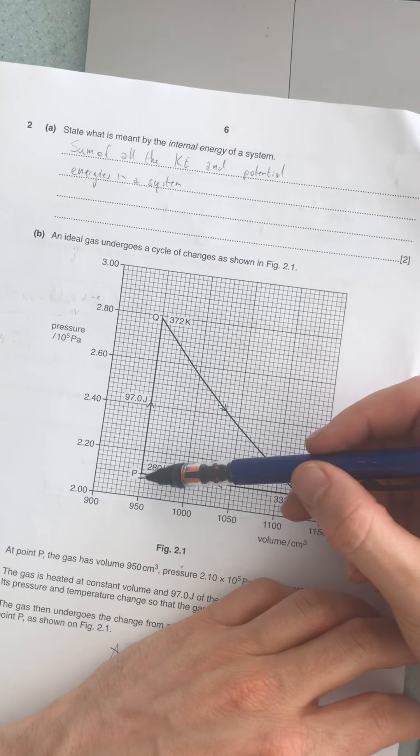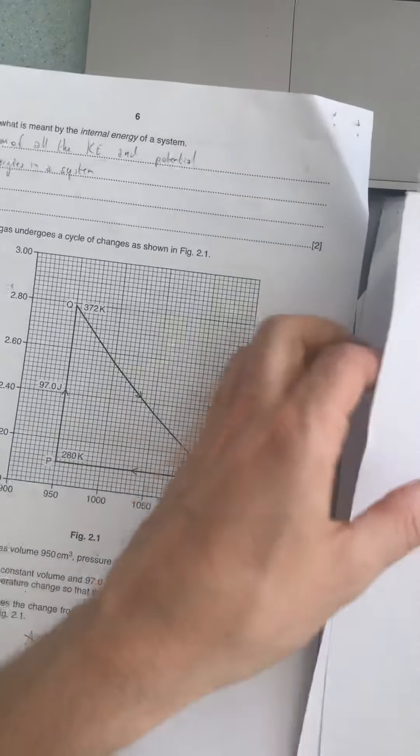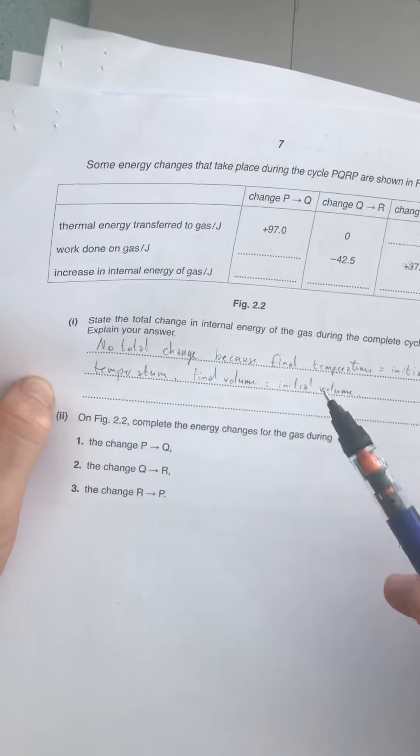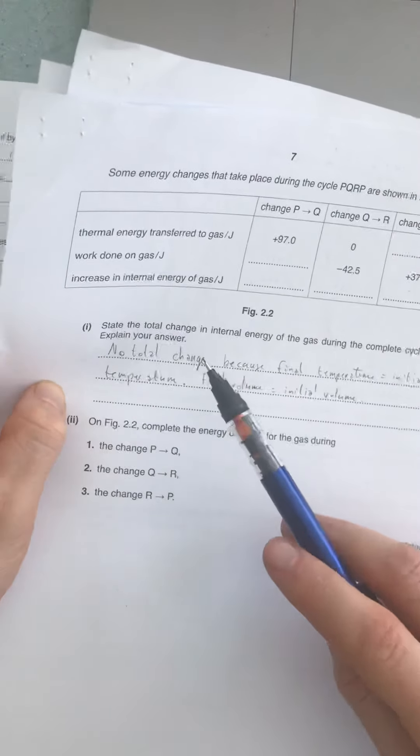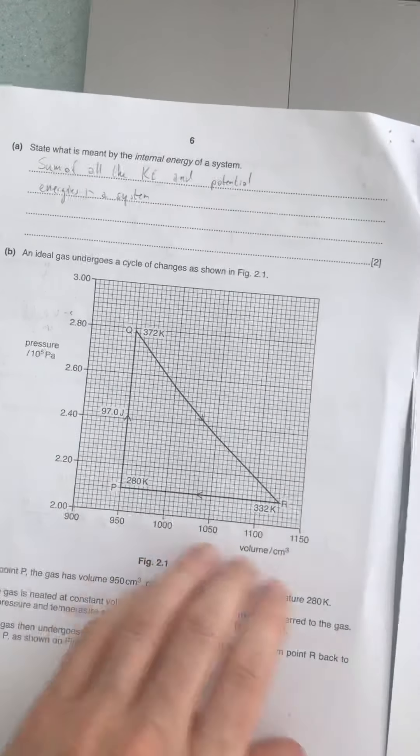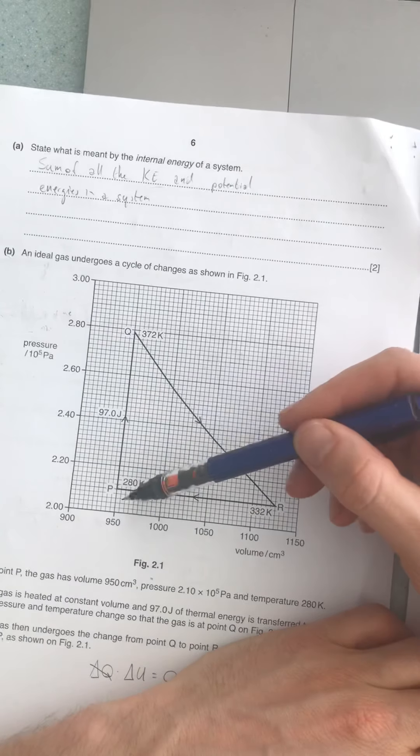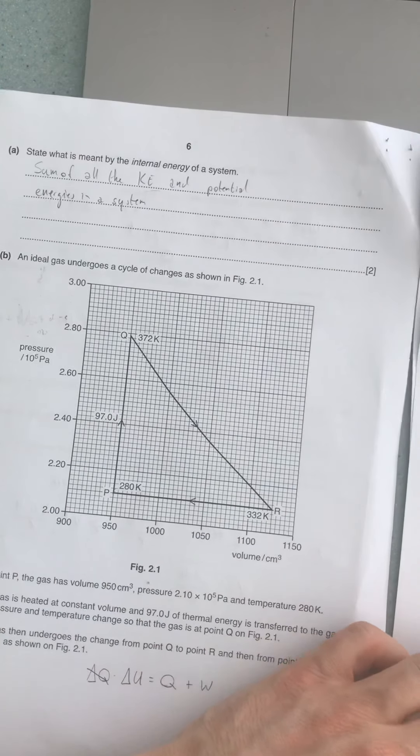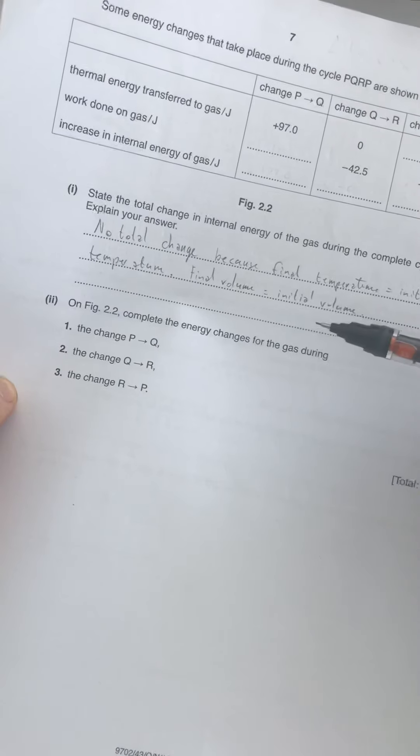So if it's in the same state, that means it must have the same amount of energy it had before. So we have no total change of energy. We need to link that to some evidence from the graph. We see that it returns to the same temperature and the same pressure and same volume, so basically just returns to the same state. That's fine.